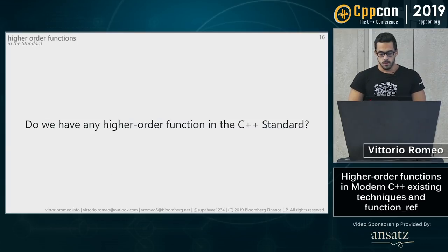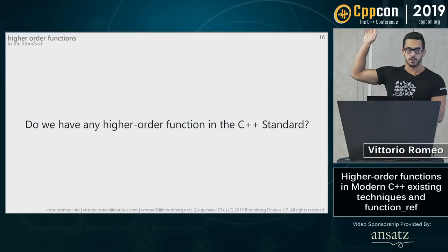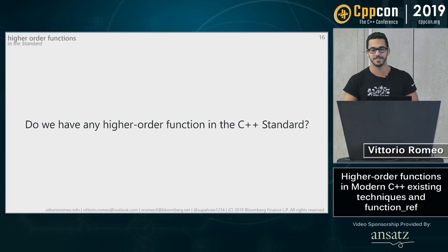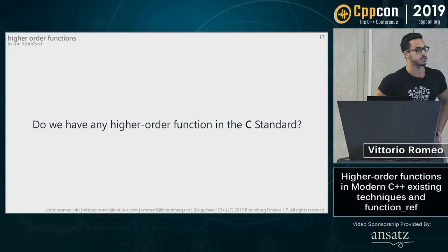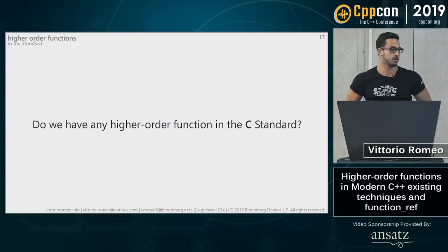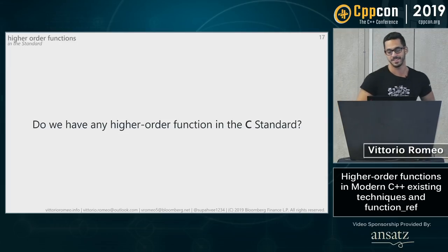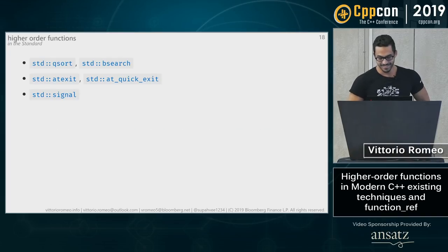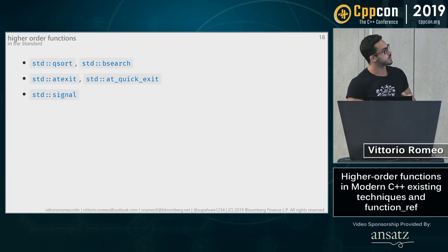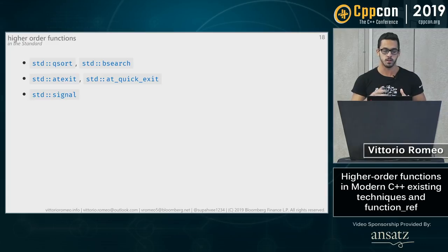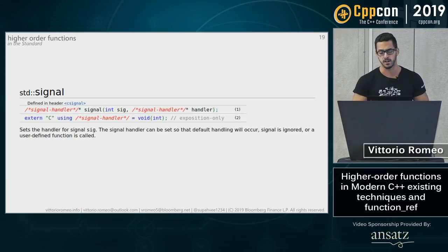Beyond std::find_if in the C++ standard, the C standard also has higher-order functions: qsort, bsearch, and also things like atexit, at_quick_exit, and signal. It doesn't always have to be a mathematical algorithm — anything that accepts another function fits the definition. Signal is a function that lets you attach a handler to a particular signal when it's raised in your application.